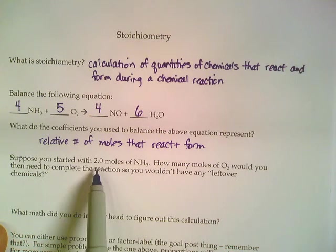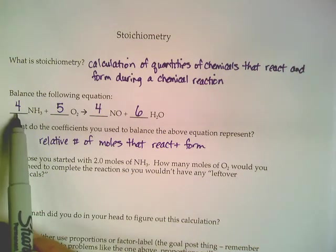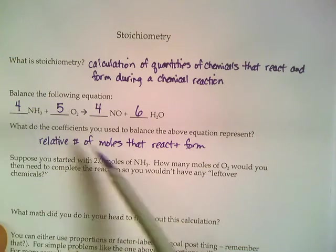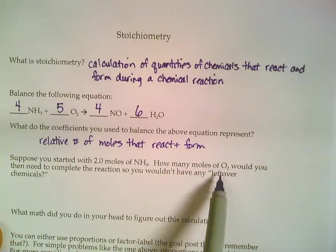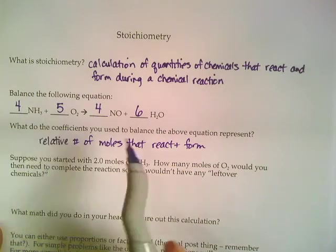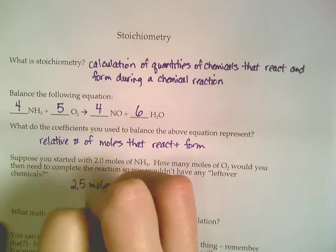So this says what if you only use 2 moles worth of NH3. So we're going to cut this amount in half. And if we want to know how many moles worth of oxygen you would need to complete the reaction, we'd have to cut this number in half, too. So you'd need 2.5 moles worth of oxygen.